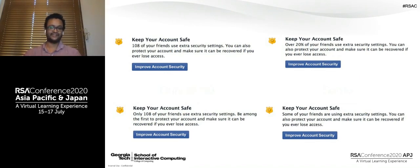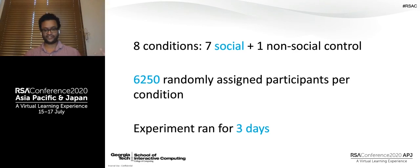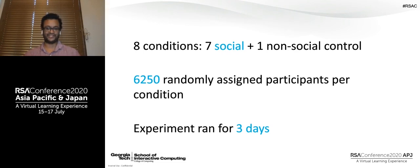Before I joined the team, Facebook was going to use a vanilla notification that just alerted people to the presence of extra cybersecurity tools. I decided to test social proof cues. I tested a variety of different social proof cues: the raw number condition showed people the exact number of their friends who use extra security tools as a way to incentivize them to click, all the way down to the 'some of your friends' condition, which was vaguer. We had eight conditions — seven social variations plus one non-social control — and randomly assigned 6,250 participants to each, running the experiment for about three days.